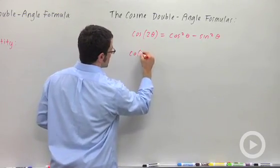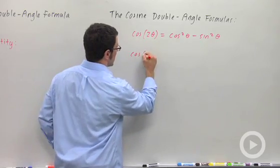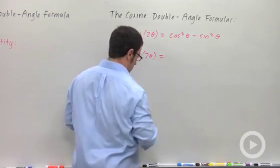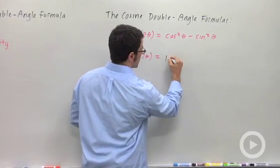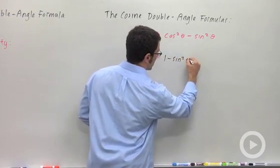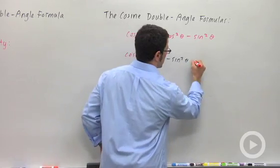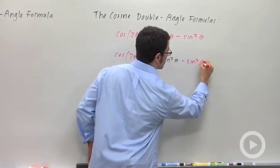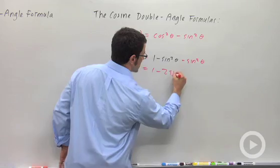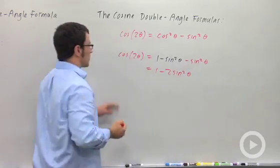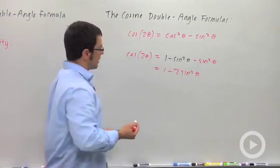So another form would be: cosine two theta equals — and for cosine squared theta, I'll replace it with one minus sine squared theta, minus sine squared theta. That gives one minus two sine squared theta. So that's a second form: cosine two theta equals one minus two sine squared theta.